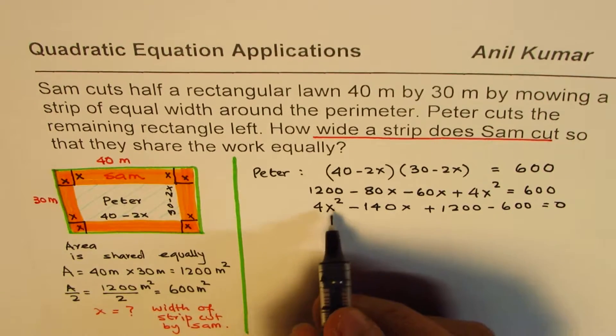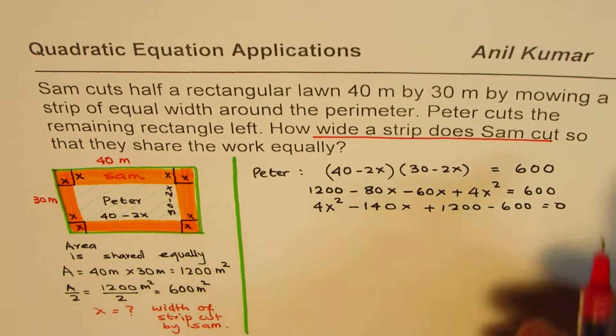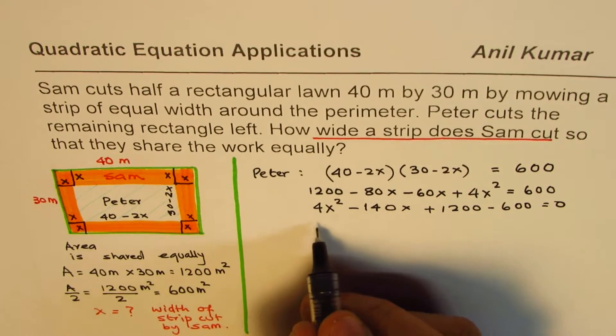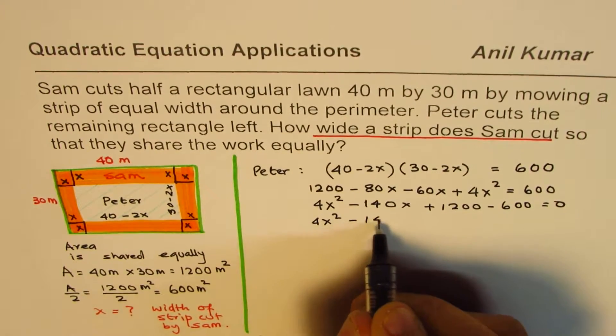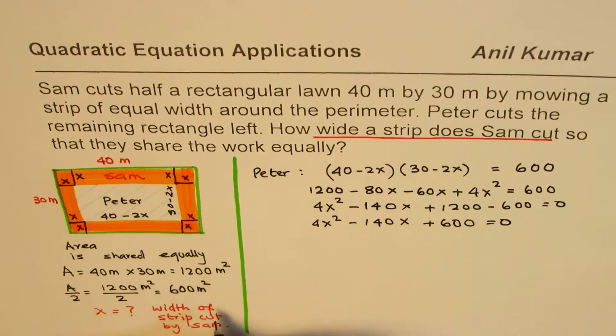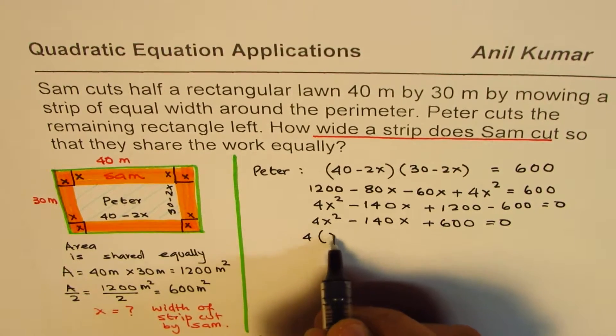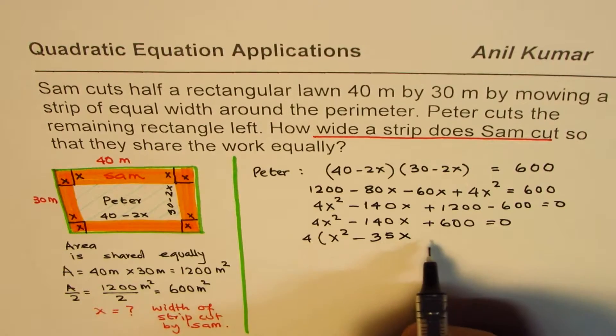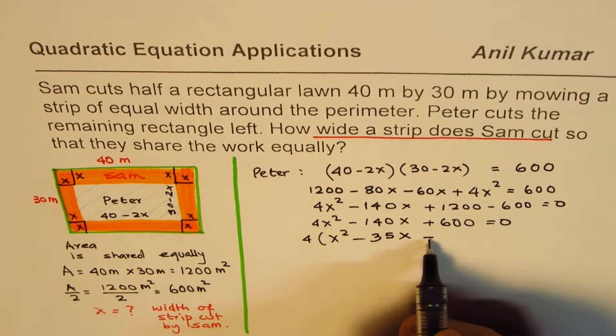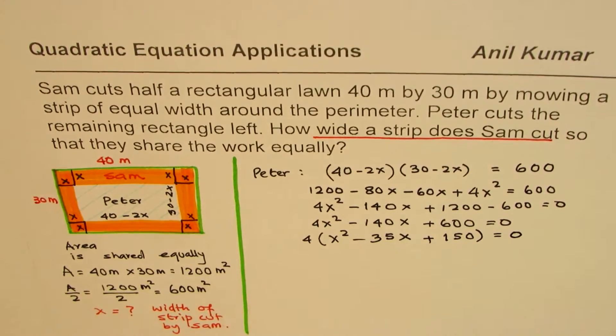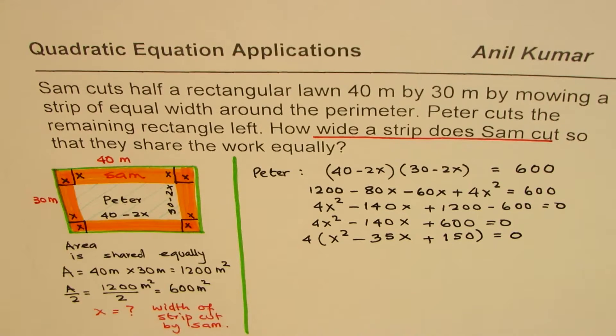Now we can divide each term by 4. All are multiples of 4. So we have 4x² minus 140x plus 600 equals 0. Let's take factor out 4. We have x² minus 35x - when you divide 600 by 4, that's 150 - equals 0. That is the equation which you get.